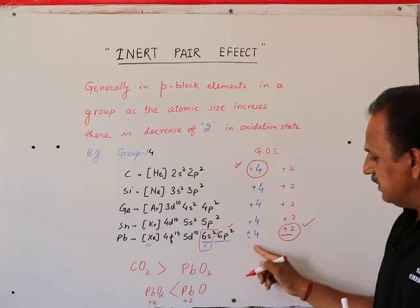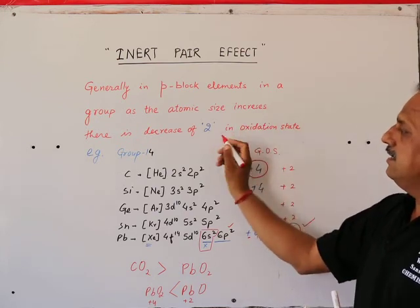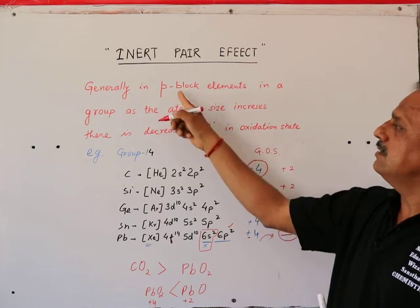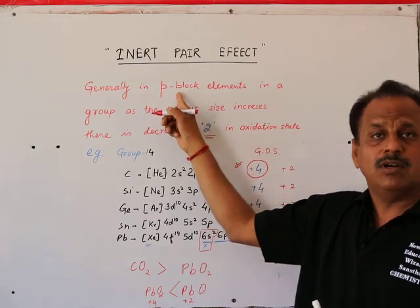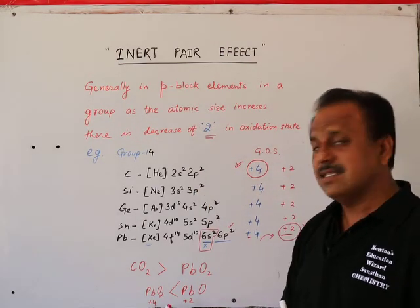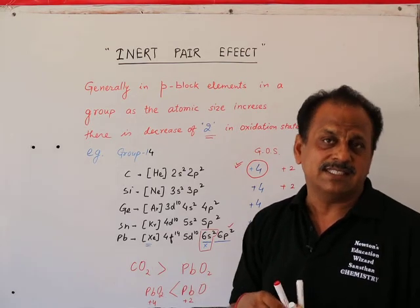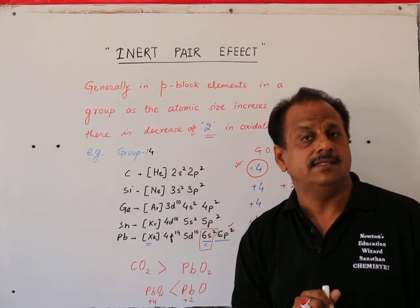Top to bottom, the decrease of 2 in oxidation state is the inert pair effect. It happens generally in P-block elements as size increases down the group.